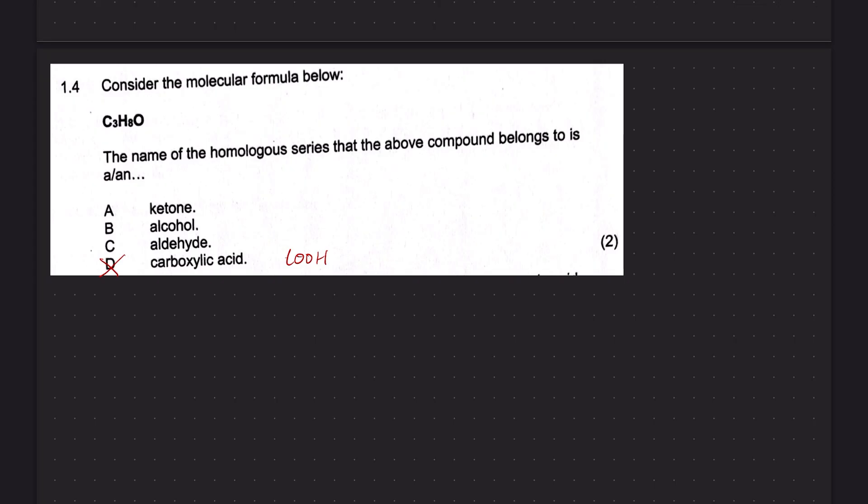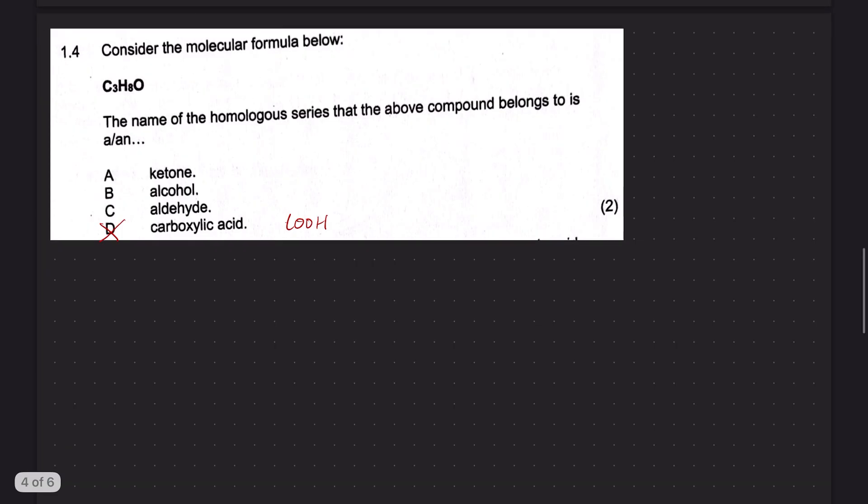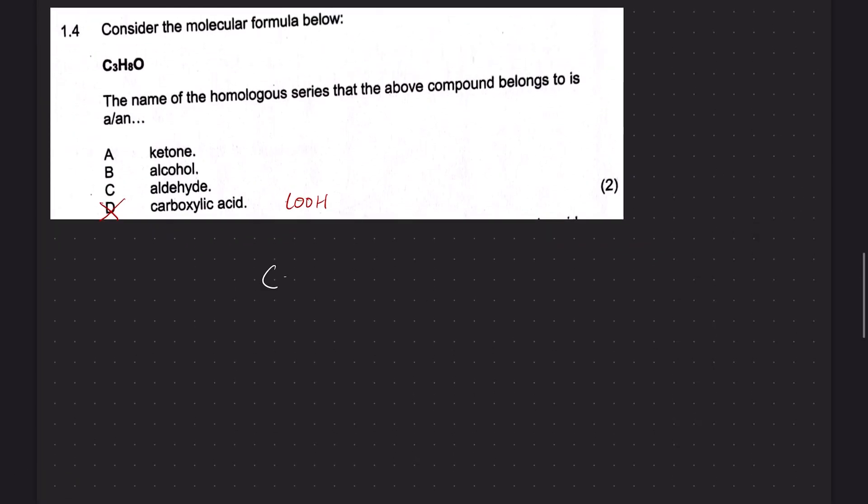That means we're left with ketone, alcohol, or aldehyde. So all three are possible. We just need to figure out which one. Now, there's a really easy way to do it. If you look at this molecular formula, C3H8O, this follows the formula CnH2n+2O. This 2n+2 tells us that there's only single bonds.